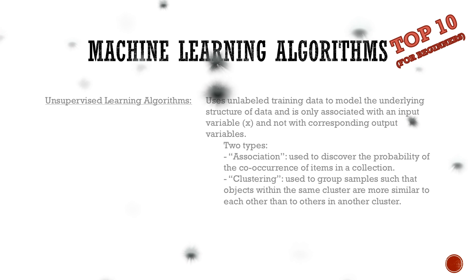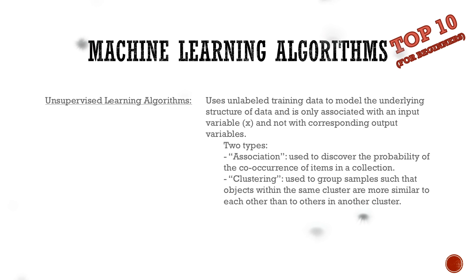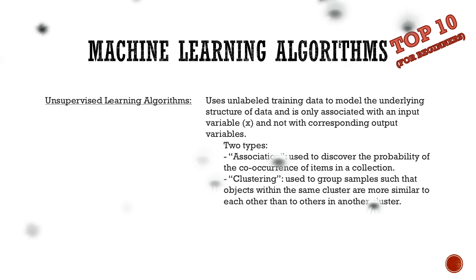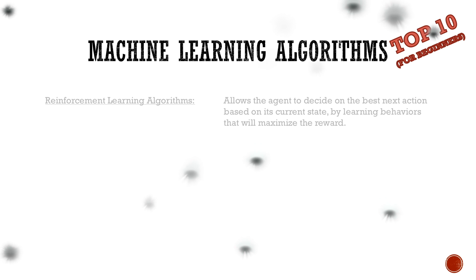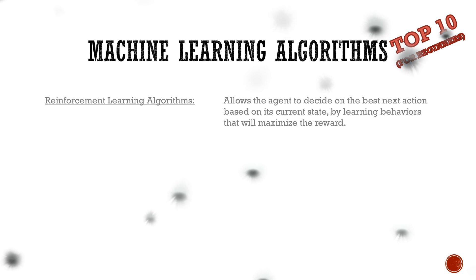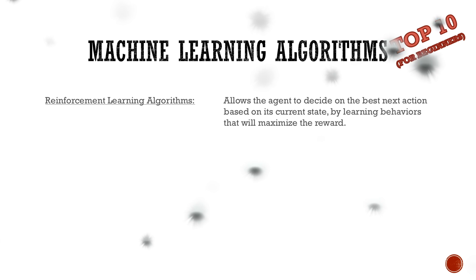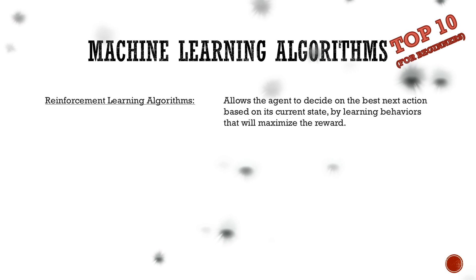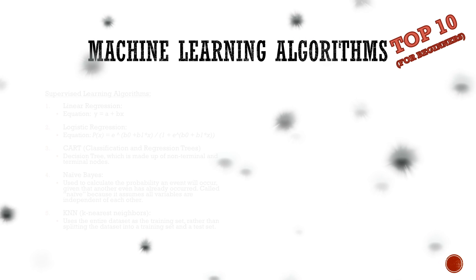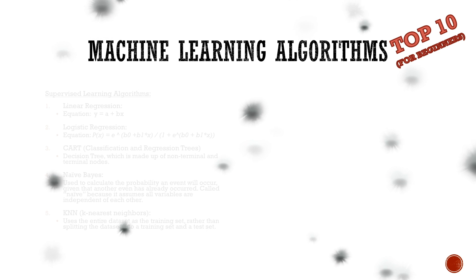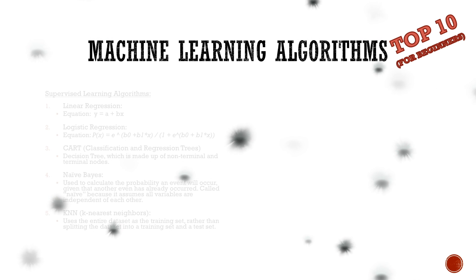Two types of unsupervised learning algorithms are association, which is used to discover the probability of co-occurrence of items in a collection, and clustering, used to group samples such that objects within the same cluster are more similar to each other than to others in another cluster. Reinforcement learning algorithms allow agents to decide on the best next action based on the current state, by learning behaviors that will maximize the reward. Learning is usually done through a trial and error process. The first algorithms in the article "10 Top Machine Learning Algorithms for Beginners" by Rene Shaw are all supervised learning algorithms.